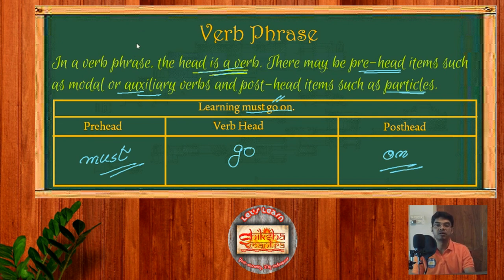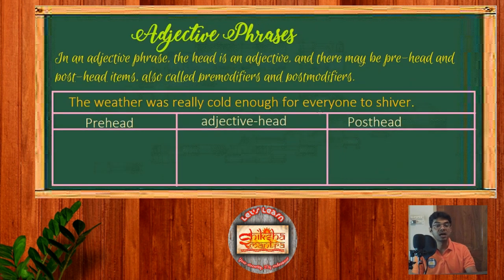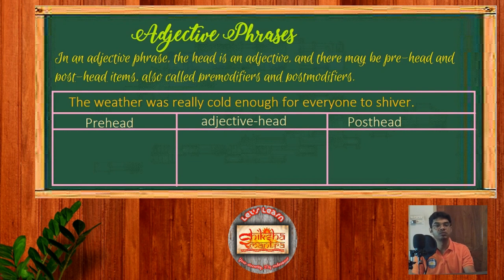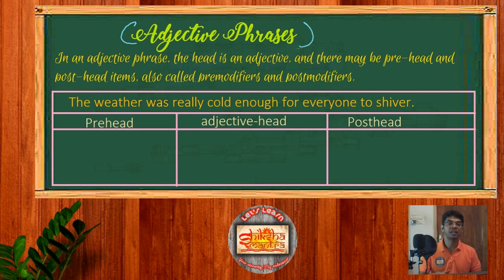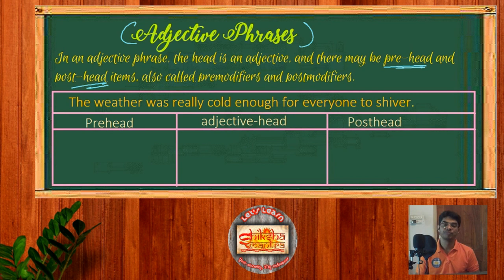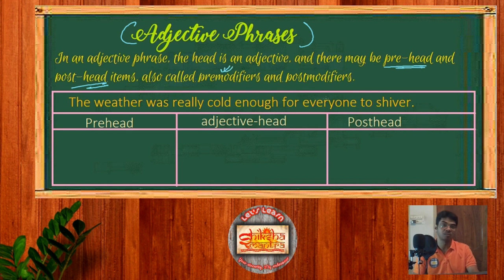Now, after the verb phrase, it's better for us to discuss adjective phrases. Adjective phrases are really very, very important and they are also very frequent in our sentences. So it's better for us to check adjective phrases now. Adjective phrases means here the head would be an adjective, and we'll also find a pre-head and a post-head. For adjectives, the pre-head can be termed as pre-modifiers and the post-head can be termed as post-modifiers.